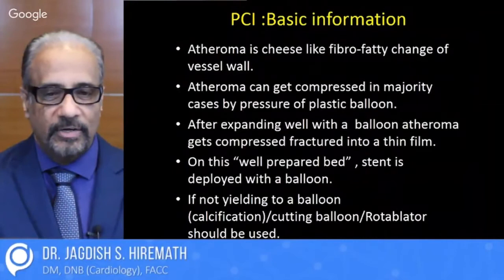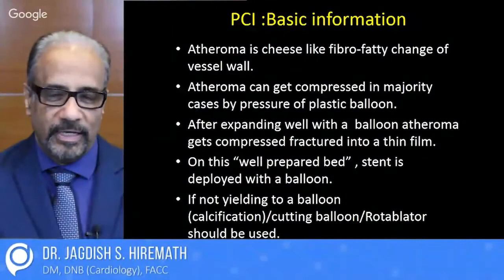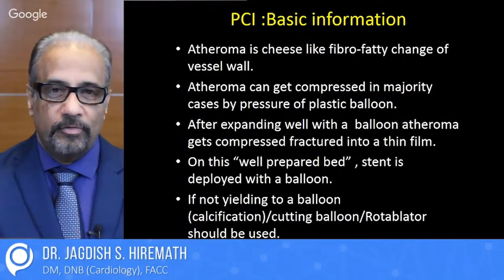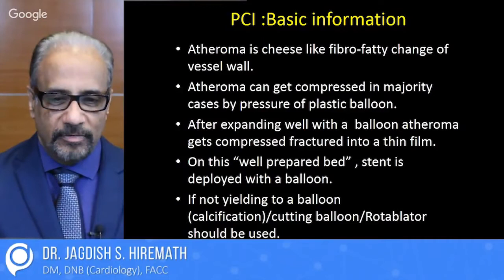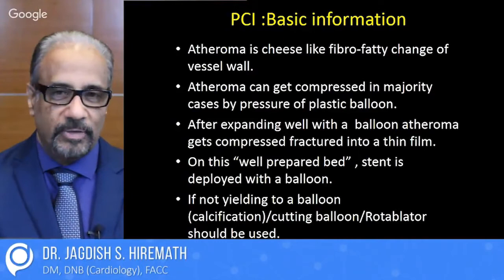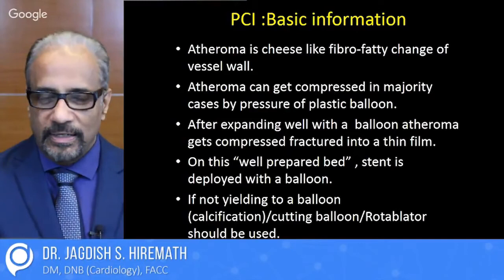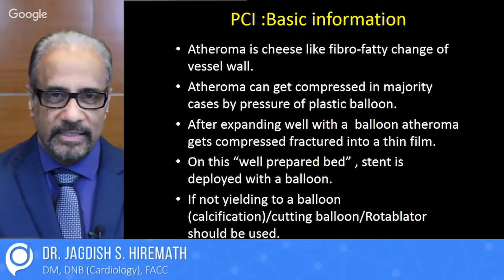These are tiny balloons made of 2 to 3.5 millimeter diameter and they are under high pressure — the pressure required to inflate a double-decker bus tire, up to 12 to 13 bars — by which the atheroma is compressed to the side as a thin film. On this well-prepared bed, the stent is deployed with a balloon. If the bed is not yielding, then we have to cut the calcium using a rotablator, a cutting balloon, or some other devices, and then implant the stent in place.